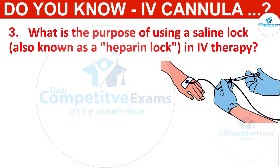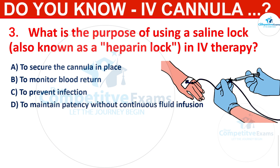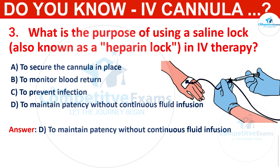What is the purpose of using a saline lock, also known as a heparin lock, in IV therapy? Options: to secure the cannula in place, to monitor blood return, to prevent infection, or to maintain patency without continuous fluid infusion. The correct answer is to maintain patency without continuous fluid infusion. A saline lock is used to keep the IV catheter open without the need for continuous fluid administration.